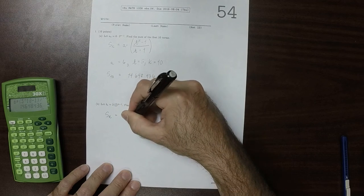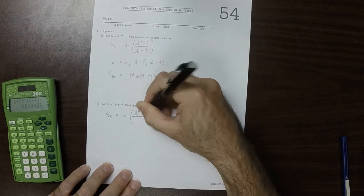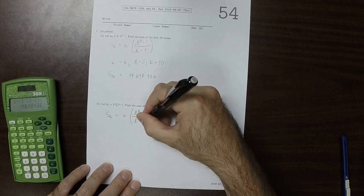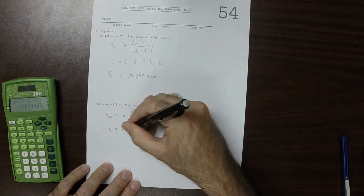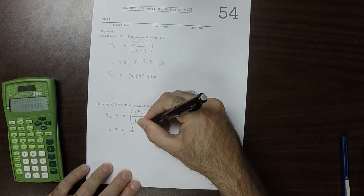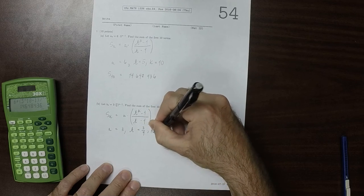And we're going to do it with A is 3, R is 3 fourths, and K is 10.